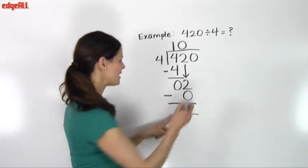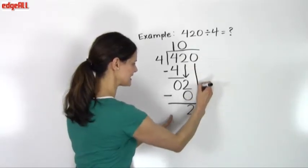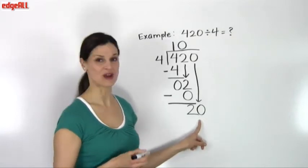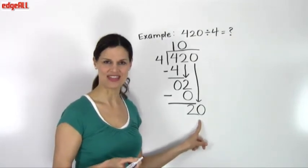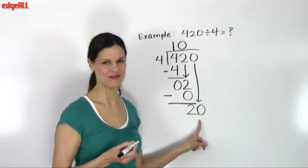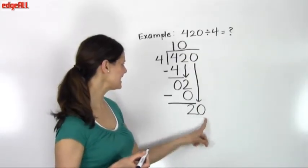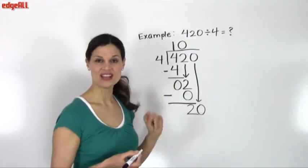I go ahead and pull that next number down. Now I have a very simple and straightforward division problem. I have a number that's much greater than 4 to divide by. So I now have the problem of 20 divided by 4, which is 5.